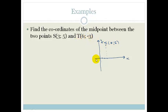T is at 6 minus 3. So that's already at 3, 4, 5, 6, and then 1, 2, 3. So that would be T, and that would be at 6 minus 3.